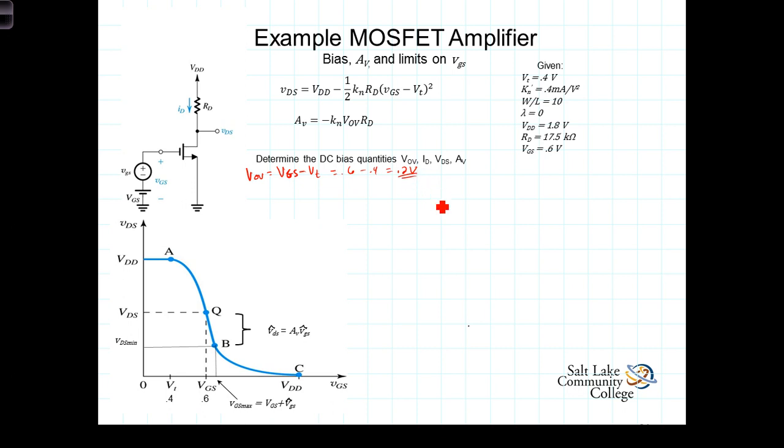Now, I sub D we can get, we're going to assume that it's saturated, and I sub D then is equal to 1.5 K sub N prime W over L times VOV squared, which is equal to 1.5 times K sub N prime is 0.4, W over L we're told is 10, and VOV we just calculated to be 0.2, that's going to be squared, and that gives us that I sub D is equal to 0.08 milliamps or 80 microamps.